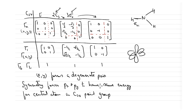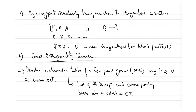This is a direct application of symmetry: symmetry forces px and py to have the same energy for the central atom in C3v symmetry. Because x and y cannot be separated by symmetry, px and py are degenerate. In the next lecture we will discuss the Great Orthogonality Theorem and how to use it to obtain irreducible representations.